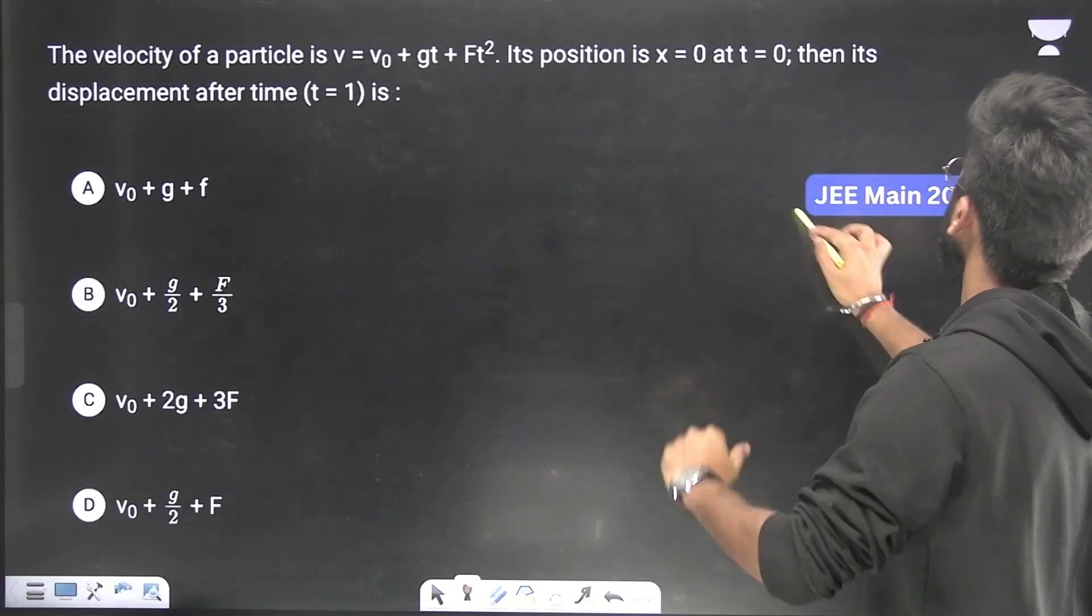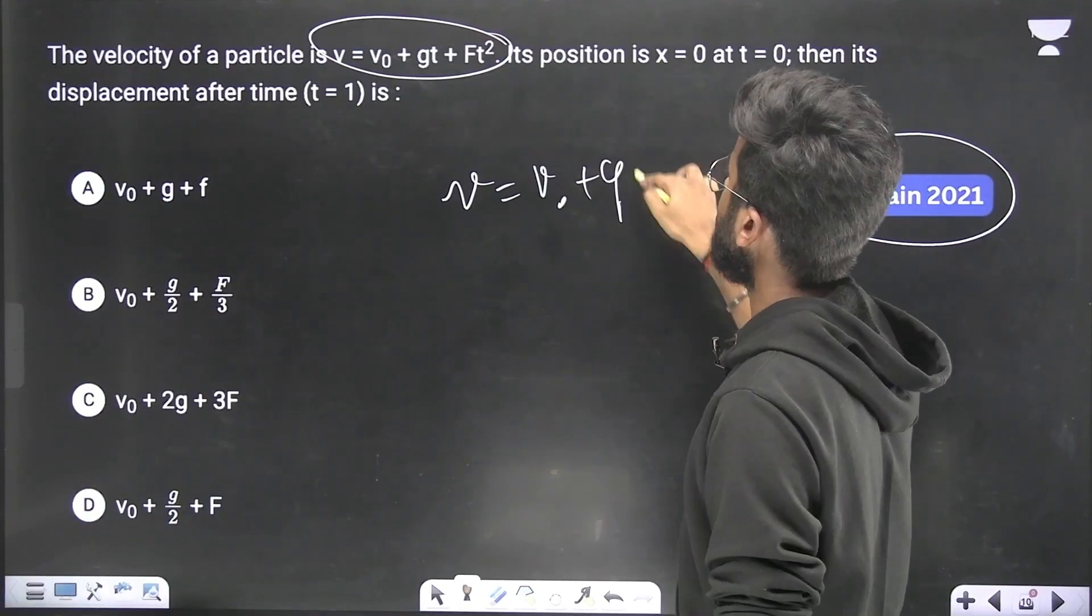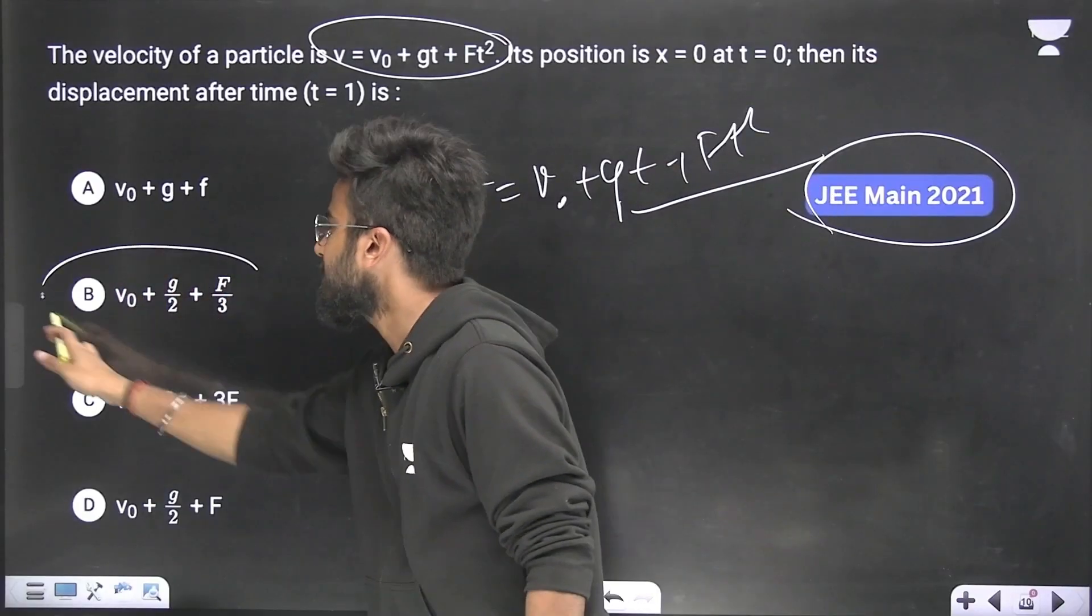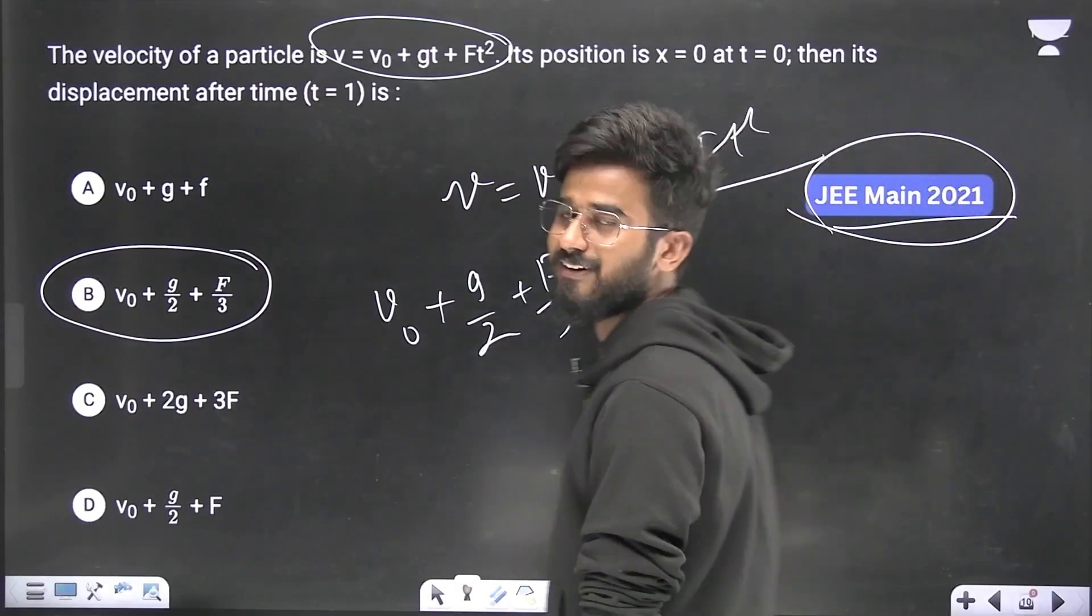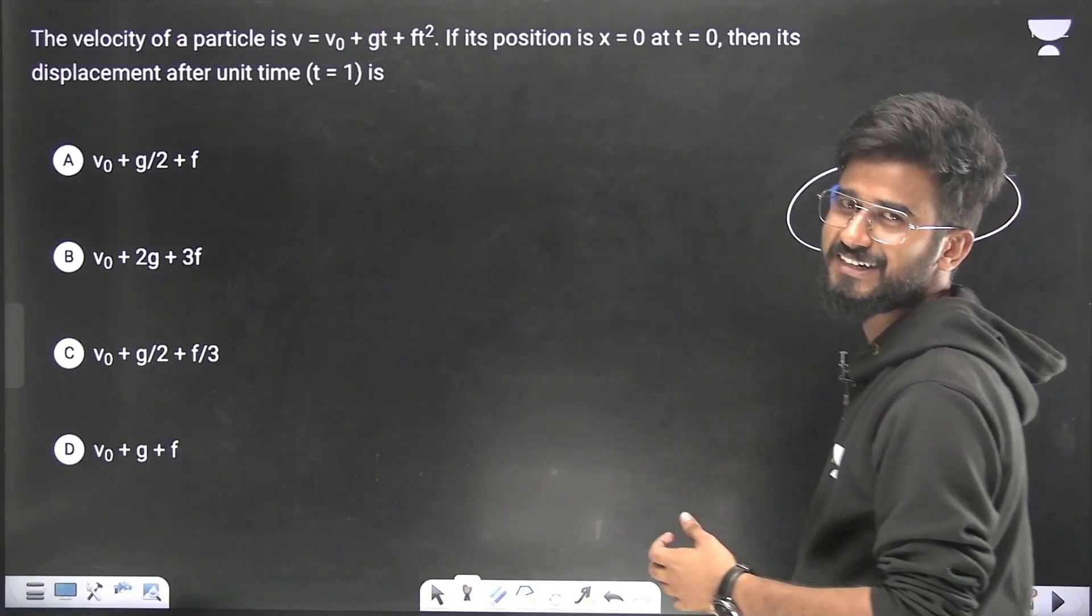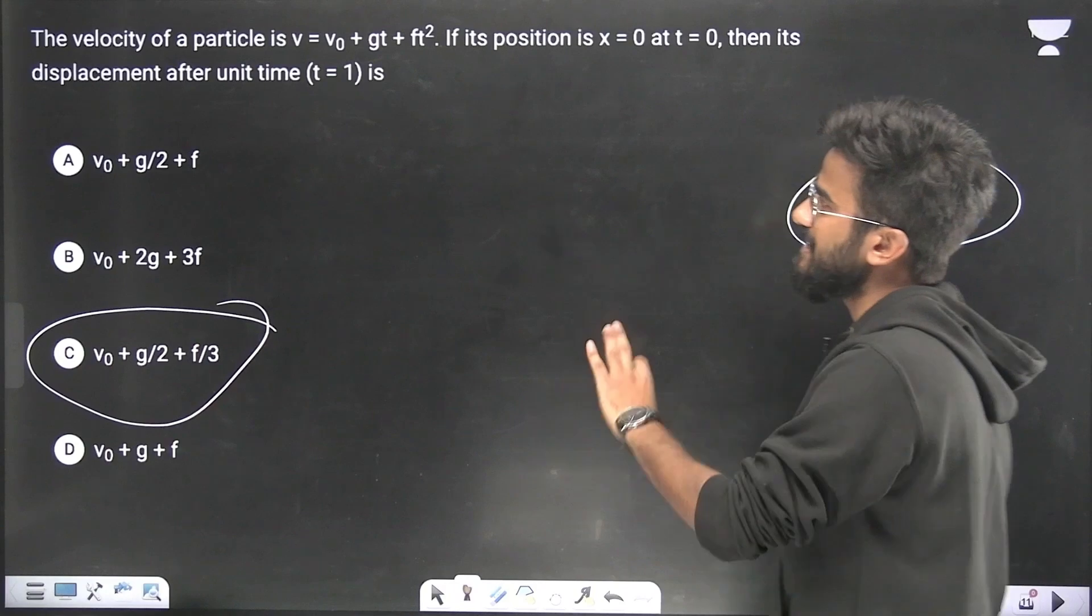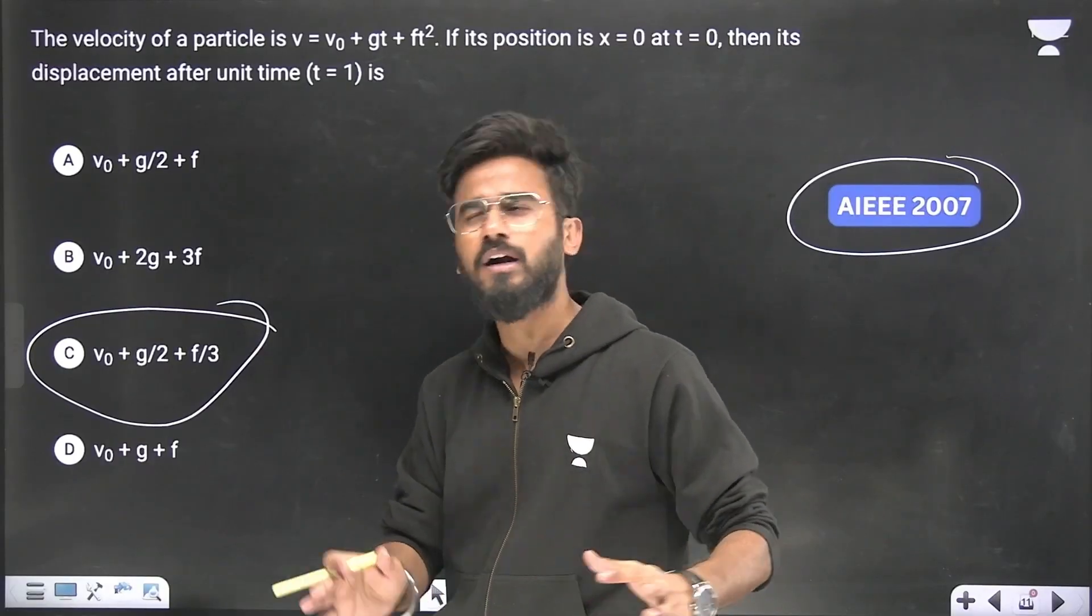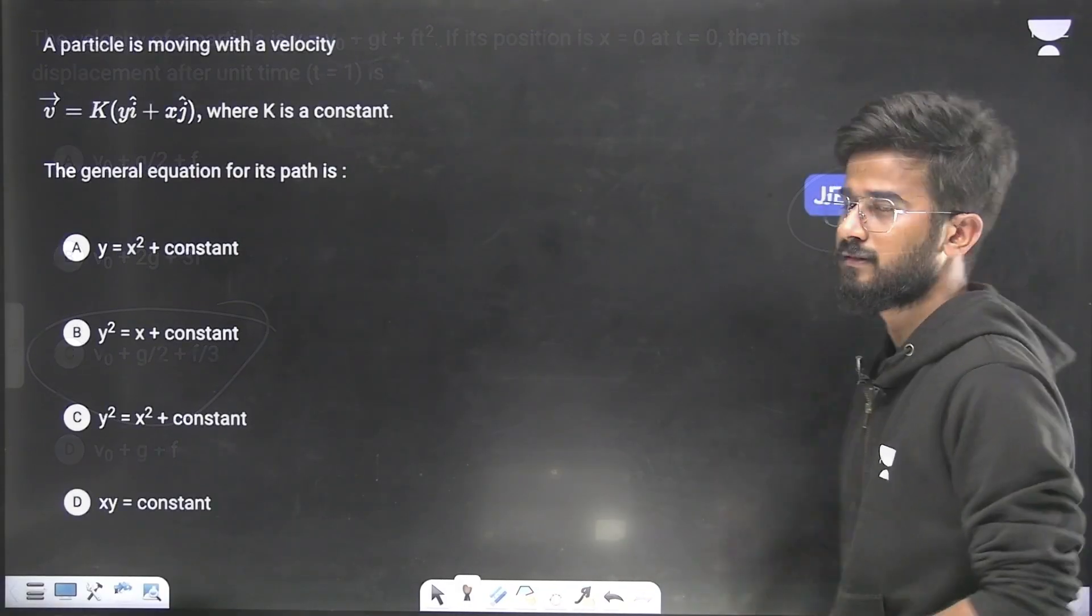Let us talk about something else. One more problem from JEE 2021. It simply says that we have a function of velocity v equals v0 plus gt plus ft squared, and you have to find the displacement. I solved this problem and I found the answer is v0 plus g by 2 plus f by 3. This was a problem from JEE Main 2021. I moved on to the next problem, and it was AIEEE 2007. Look at the problem, look at the data, look at the function. Identical. Identical. And the answer is also identical. He could change the function, but he did not. So it simply says that PYQs are the must key. PYQs are the key for JEE Main.